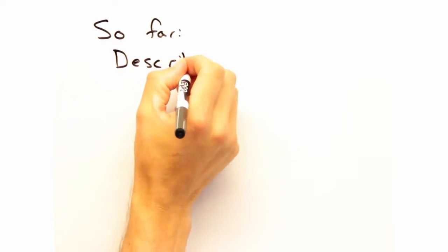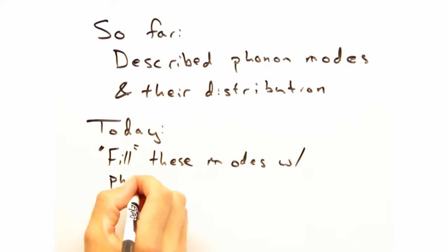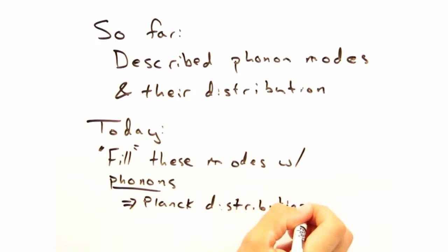So far we've been talking about vibrational modes and how they're distributed, but we haven't really talked about how they're filled. Today we're going to be using some statistics to talk about the Planck distribution and the heat capacity for phonons.